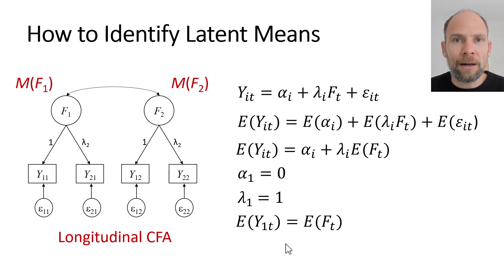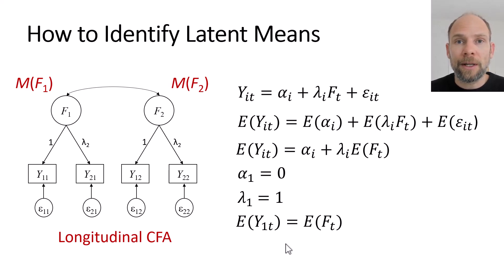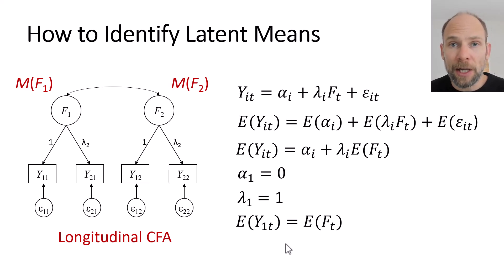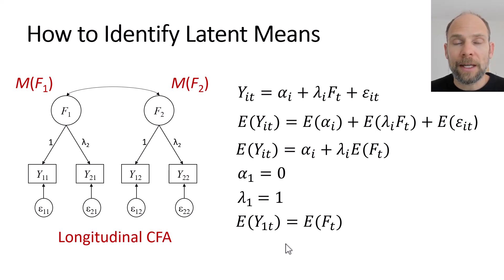One might say this is trivial — that latent means are simply equal to the observed means. But it's not totally trivial, because the model is restricted: all remaining intercepts and loadings are set equal across time, implying a testable covariance and mean structure, so the model-implied means will not be exactly equal to the observed means. In this way, we can identify the mean at each time point. The same principle applies in the latent difference or latent change score model, allowing us to identify and estimate the mean of the latent difference score variable, and then test whether means differ significantly across time.